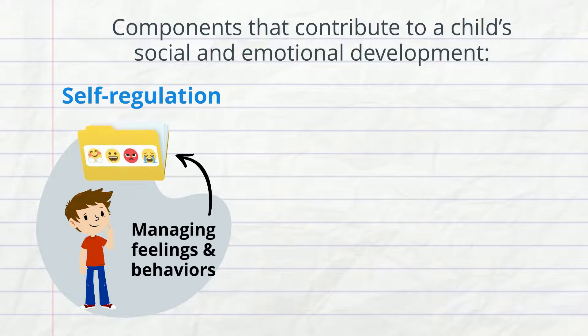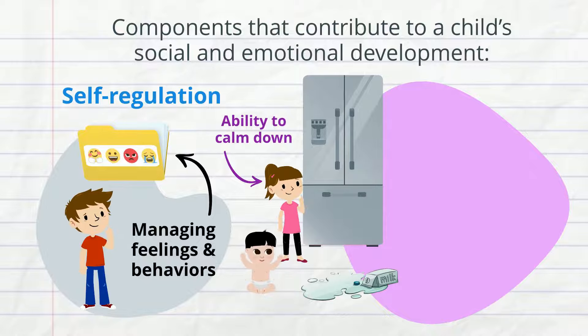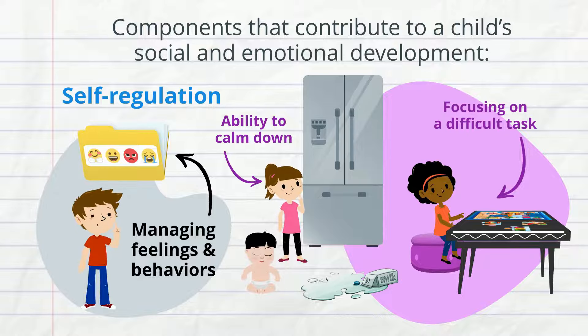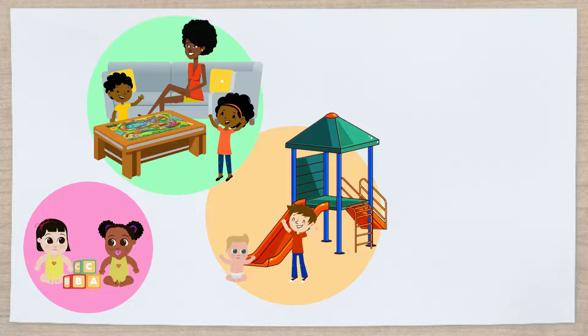Self-regulation – how well a child manages their feelings and behaviors. Being able to calm down when experiencing big emotions – anxiety, anger, excitement, etc. – and focusing on a difficult task are examples of self-regulation.